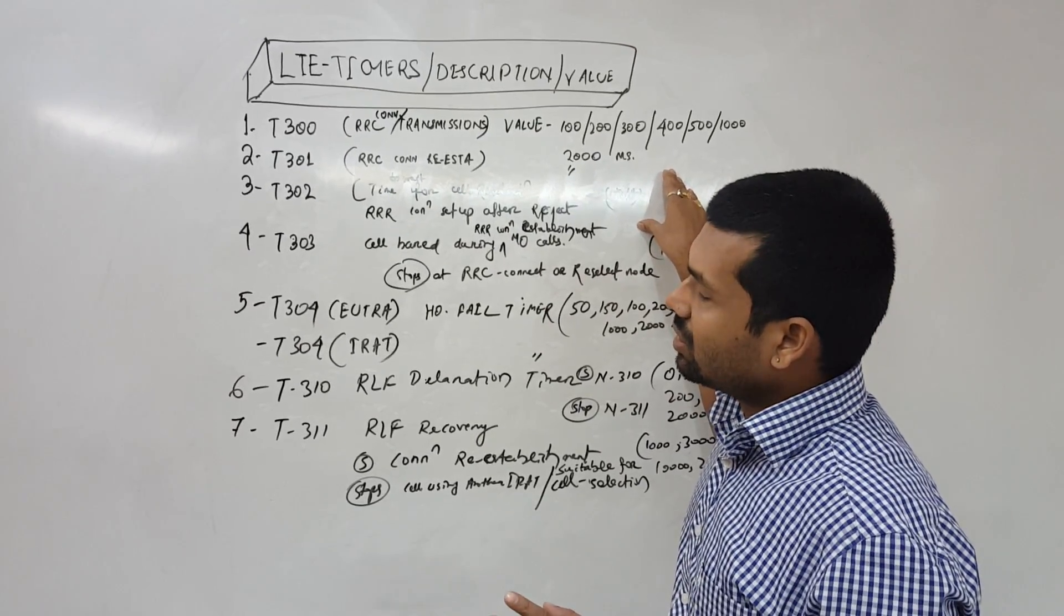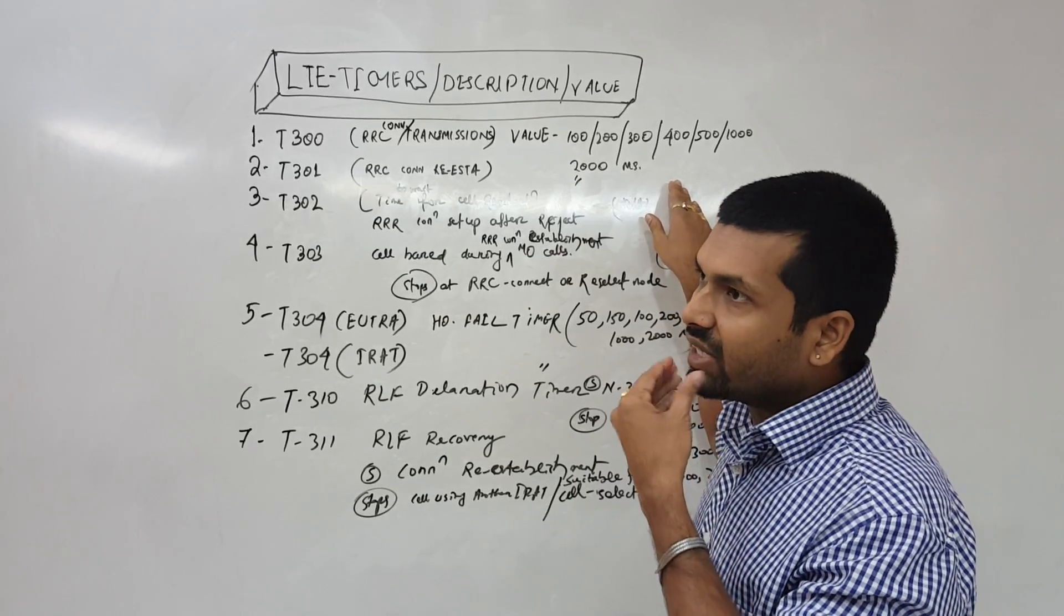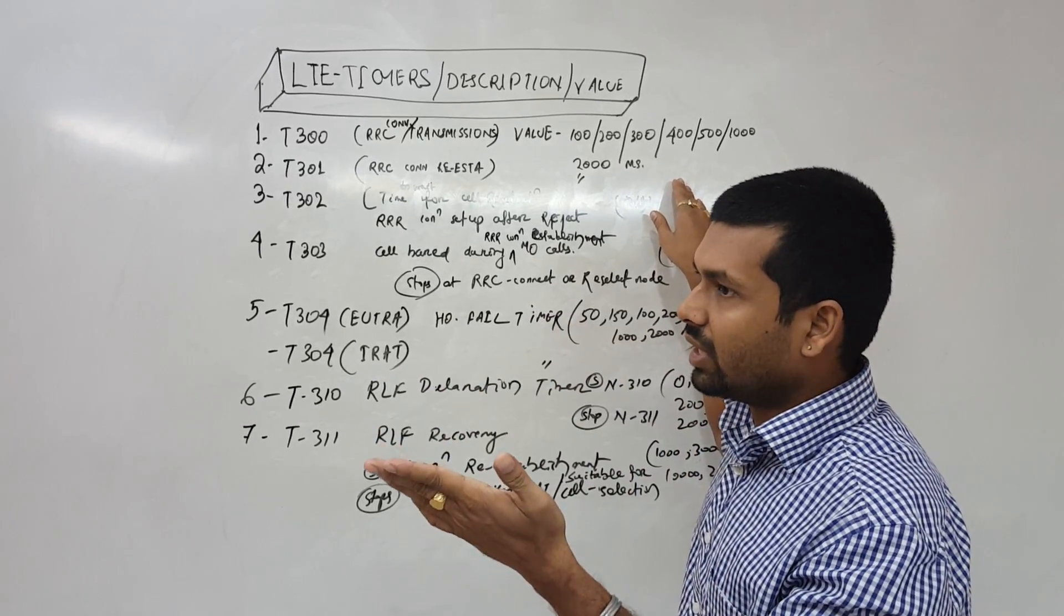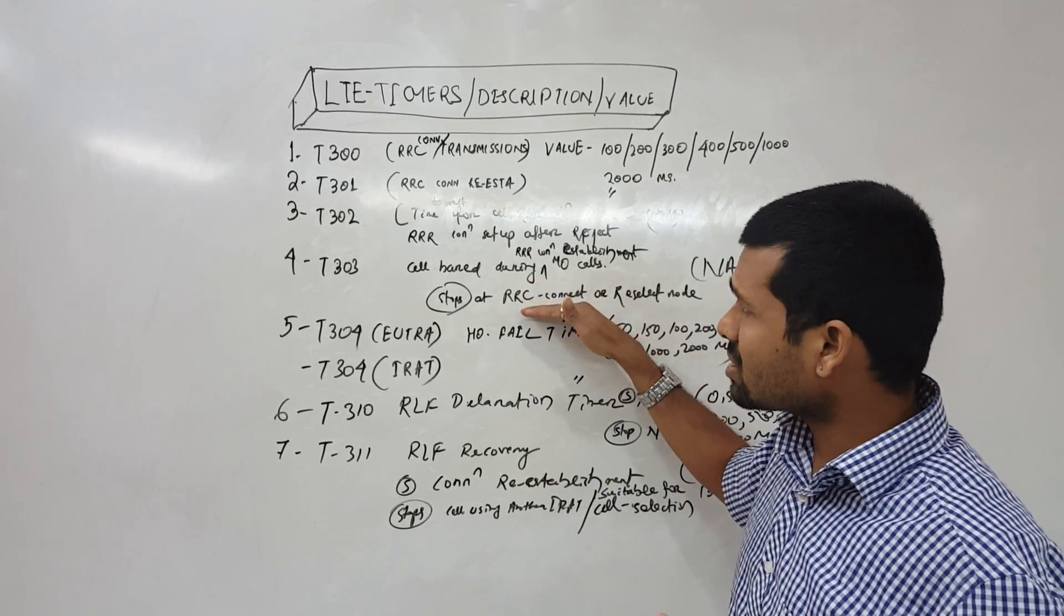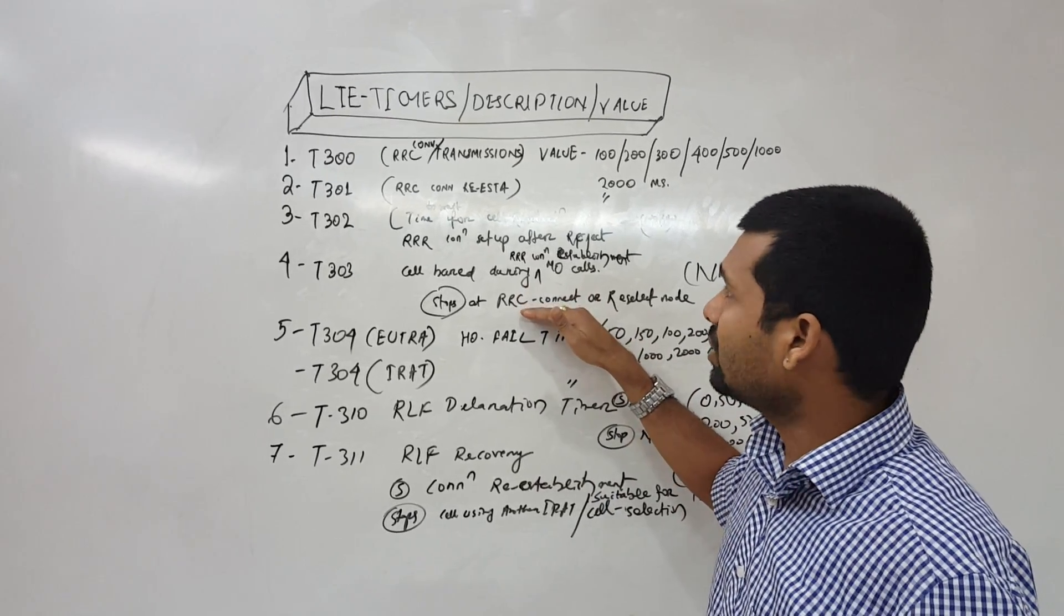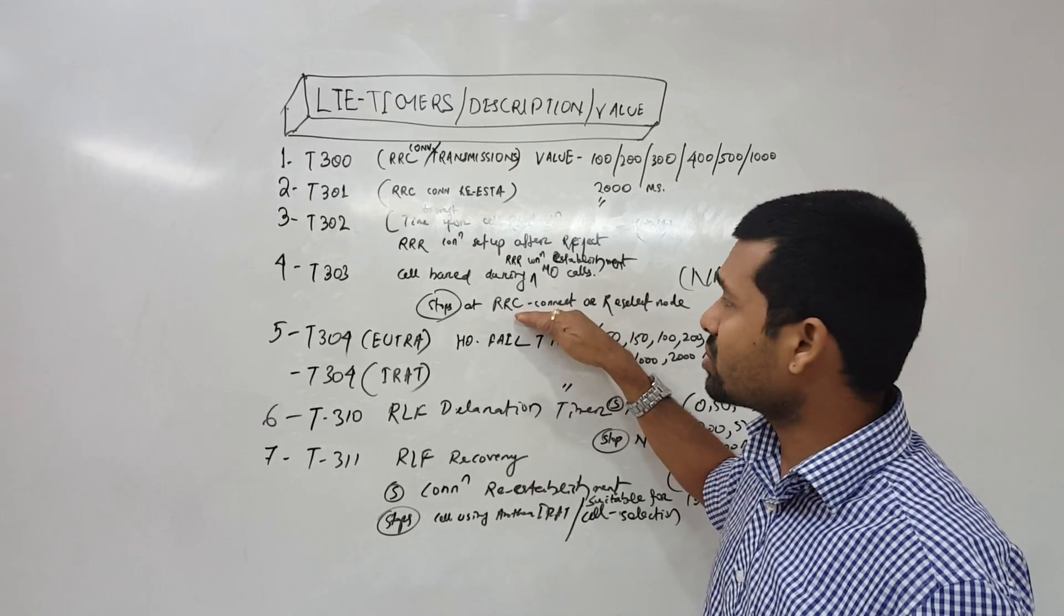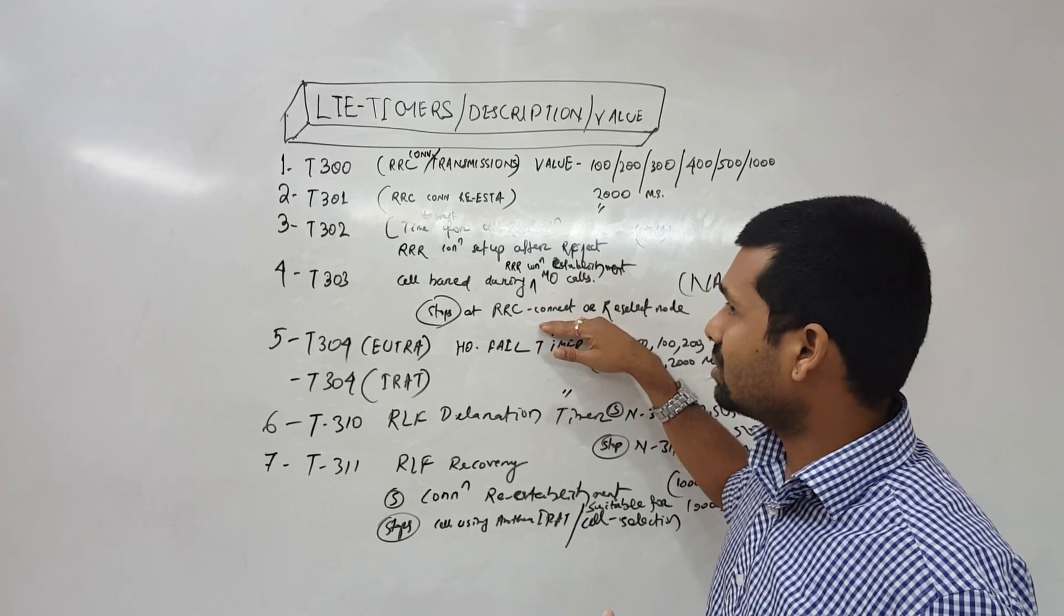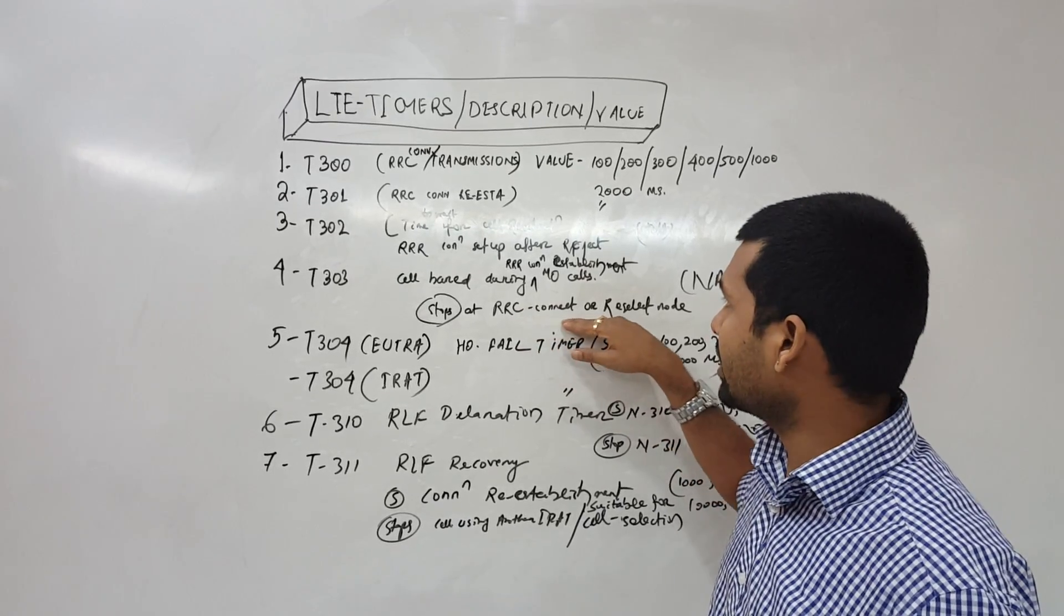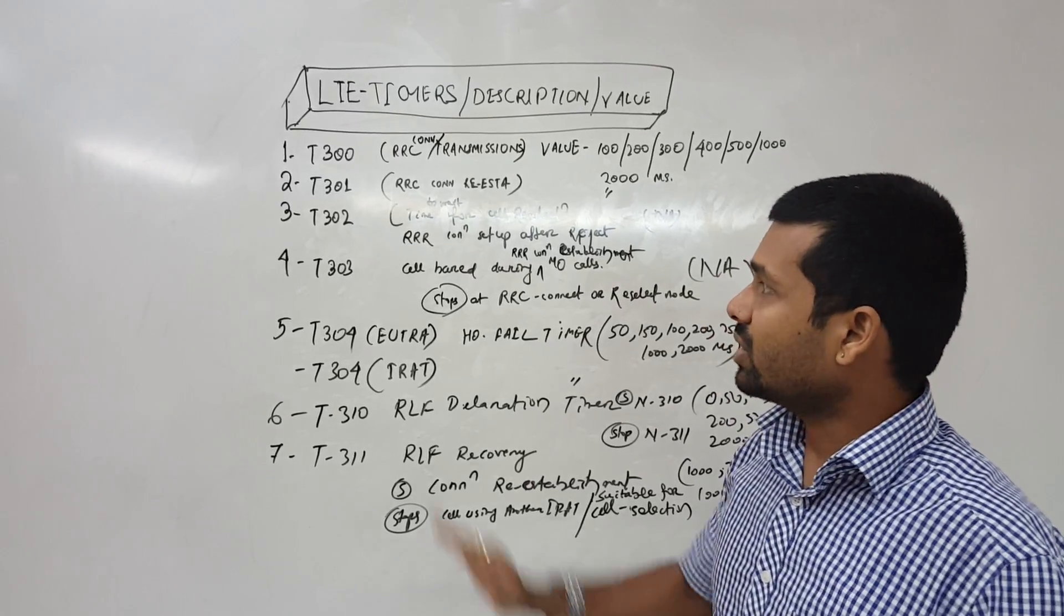Then timer T303. It is when we request a service and we are not able to access the services because the cell is barred, because access is not allowed, or resource is not there. It stops when we connect or move to RRC connected mode or reselection mode. That is T303.